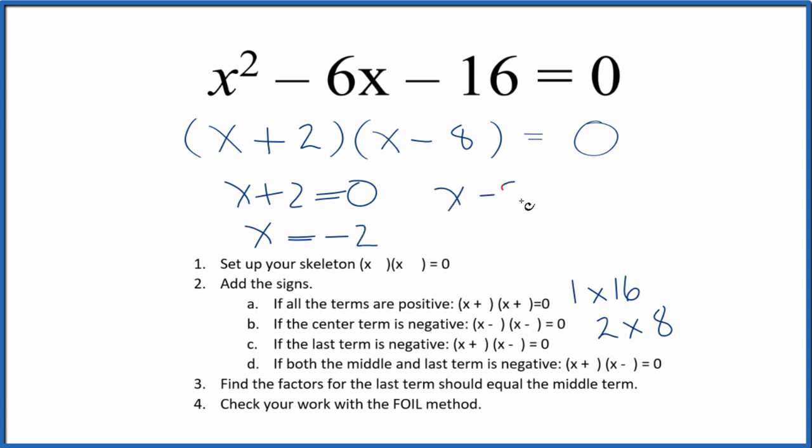Over here, x minus 8 equals 0. We add a positive 8 to both sides. x equals 8. If you put 8 in for x here, you do the math, you'll end up with 0. Likewise, if you put negative 2 in for x and do the math, you'll end up with 0 on this side of the equation.